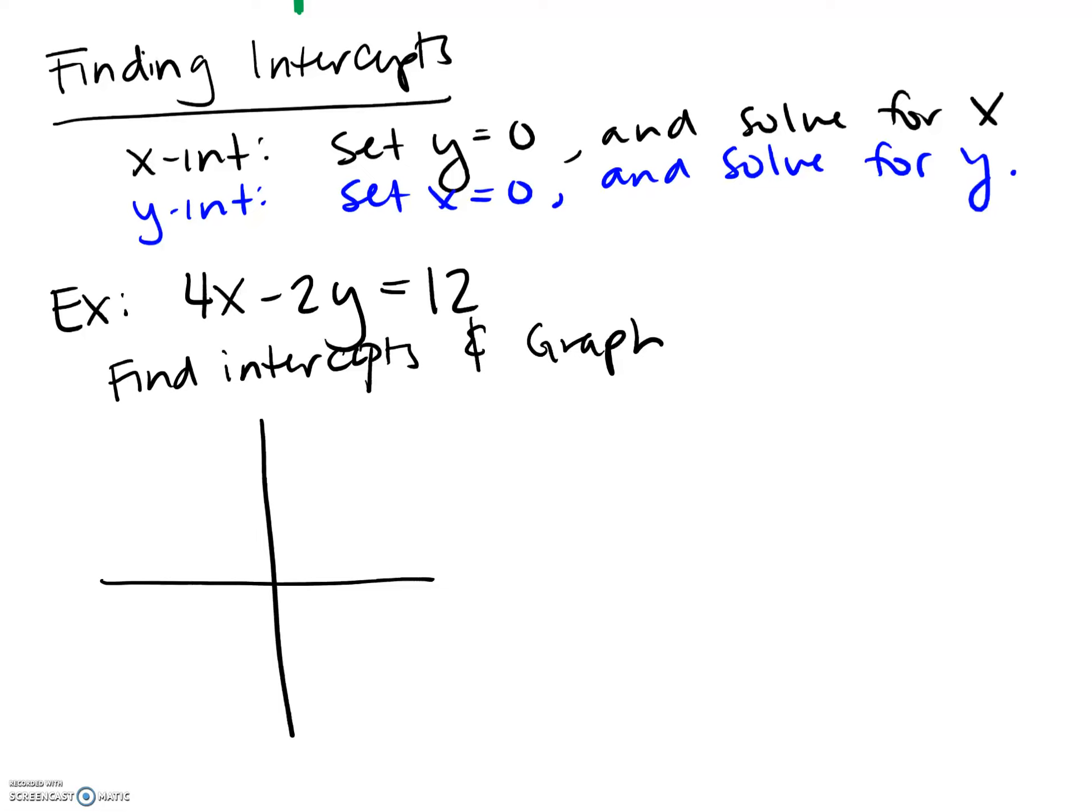So for our intercepts, we are just going to go ahead and plug zero for both of them. So we got x equals zero. This is going to find our y-intercept. So 4 times zero minus 2y is equal to 12. Negative 2y is equal to 12. Y is equal to negative 6. So we just found one intercept. This is zero, negative six. This is our y-intercept. Okay, so zero comma negative six.